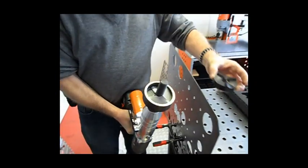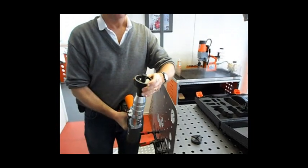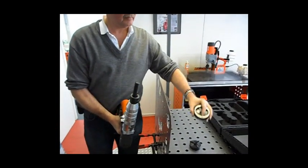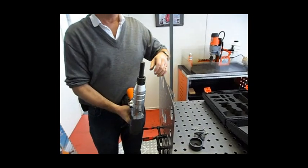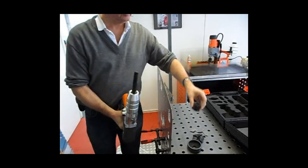We also have the TriStar Plus punch and die system, which is used for stainless, and a new low-profile two-piece punch system for heavy-duty stainless punching called the TriStar Plus S.